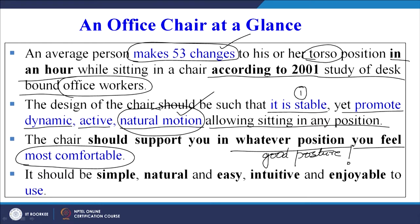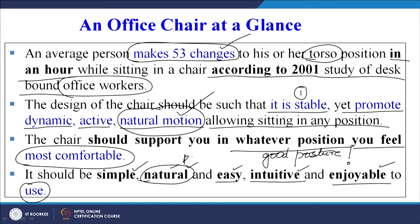The chair should be simple, natural, easy, intuitive, and enjoyable to use — intuitive meaning we instinctively understand how to sit on it. It must be a pleasurable experience and easy to operate. For example, if the backrest has to be set at an inclined angle, it must be easy to do. Most importantly, it must produce and support a natural posture, and must be simple in design.